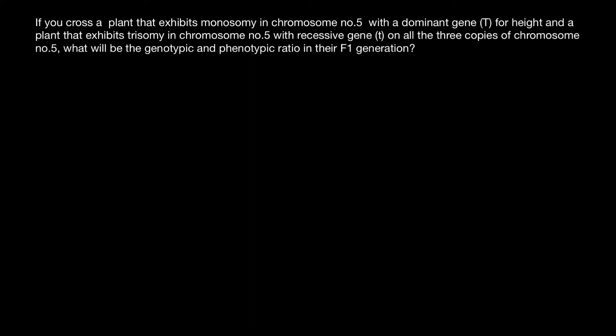All the rest of the chromosomes are present in two copies. So the organism which has only one chromosome number five with dominant gene T on it would produce two types of gametes. One would have zero chromosome number five, and another would have one chromosome with dominant gene T.